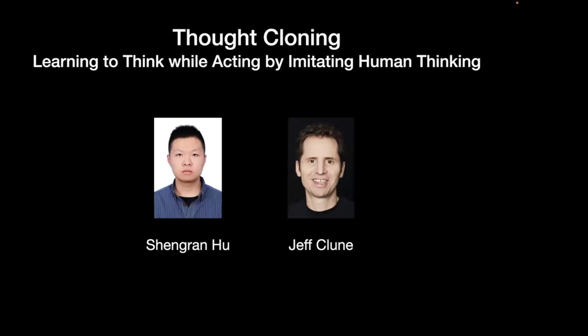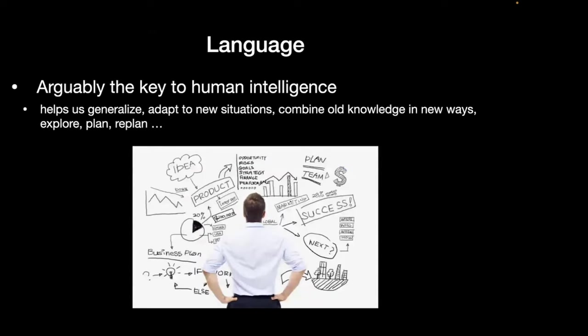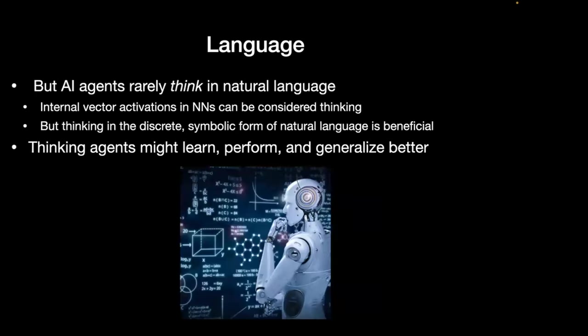The last chapter is Thought Cloning, which builds on top of VPT. The idea is to have agents that learn to think while acting by imitating humans thinking out loud. Can we do even better than VPT by adding the ability to think? Arguably, the thing that makes humans so much smarter than other animals is language — which helps us generalize, adapt to new situations, combine old knowledge in new ways, explore, plan, and replan.